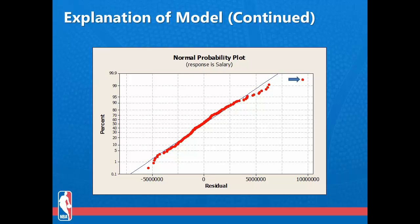Based on the normal probability plot, we can say that the residuals are roughly normally distributed. There is one outlier, which is Kobe Bryant — the highest paid player in the league — who signed a contract with the Los Angeles Lakers with a base salary of $25 million. We ran an analysis excluding his salary; however, it did not impact the R-squared value. We feel it would be inappropriate to remove this point because the goal of the model is to predict players' salary based on on-court statistics, including for star players.